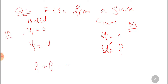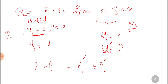Momentum of the bullet plus momentum of the gun before collision is equal to momentum of the bullet after collision plus momentum of the gun after collision. Initial momentum will be equal to zero because velocity is zero, so we write zero.